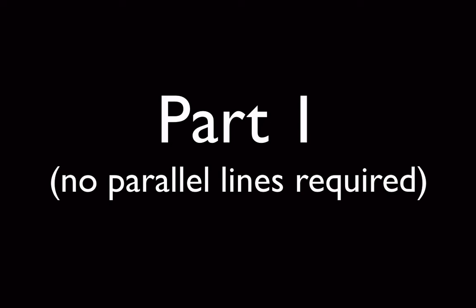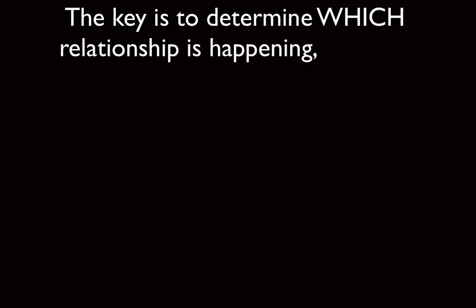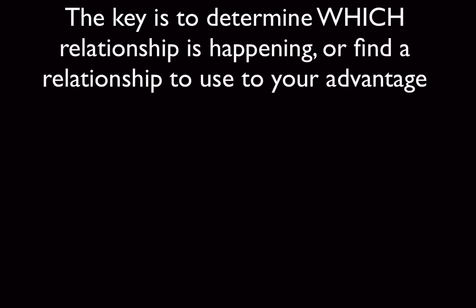In geometry class, we're going to be taking a look at angle relationships. We're going to start with part one, which requires no parallel lines, meaning these are always true regardless of if there's parallel lines in the problem. The key is to determine which relationship is happening and use that to our advantage. There are going to be a series of them.